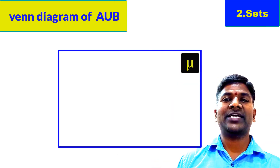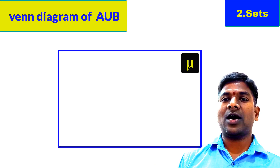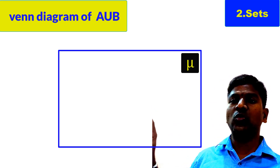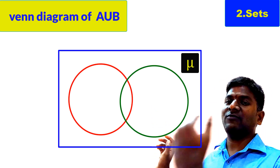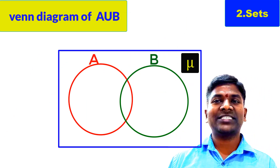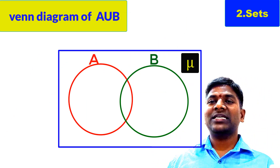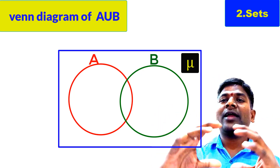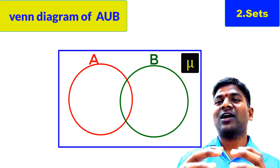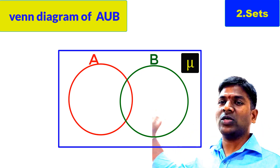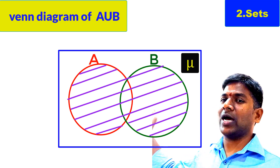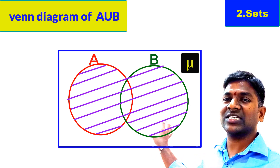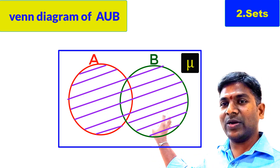Here are the two sets. They may have common elements or may not have common elements — we don't know. So generally we draw two circles overlapping with one another. The left side circle is set A, the right side circle is set B. A union B consists of the elements of set A and set B. All the elements of set A and set B are taken as the elements of A union B, so we shade the total region as shown on the screen.